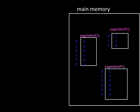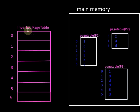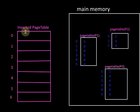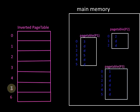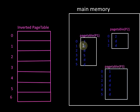To overcome this problem we use an inverted page table. In this method we keep one single global page table for all the processes — all processes share this single page table. The number of entries in the page table is equal to the number of frames of the main memory, whereas in a normal page table each process has a separate page table with entries equal to the number of pages of that process.